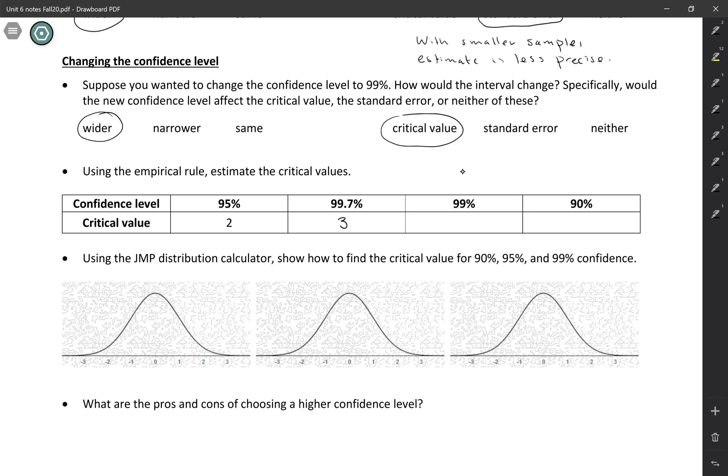In other words, you would want to add three standard errors to each side of the sample statistic. So 99%, that's not accounted for by the empirical rule, but we know that it would have to be somewhere between two and three, and we'll see how to calculate to find that value. And then for 90%, we know that would have to be somewhere between one and two, because one would be 68% confidence, so 90 would be somewhere between one and two.